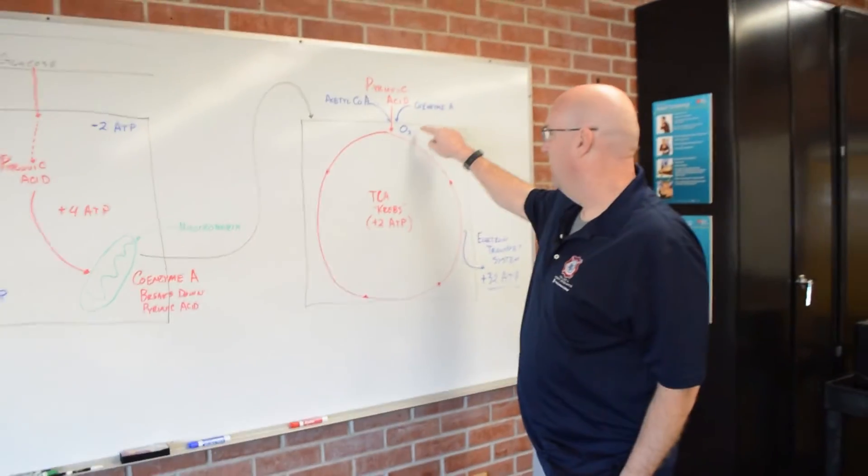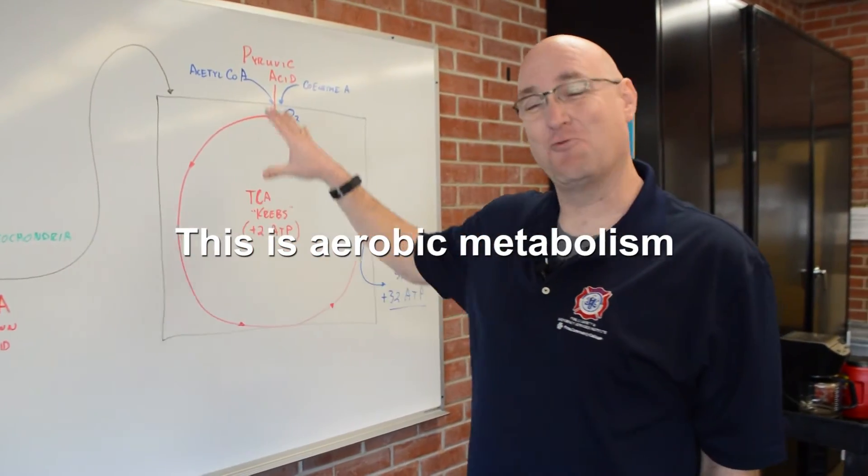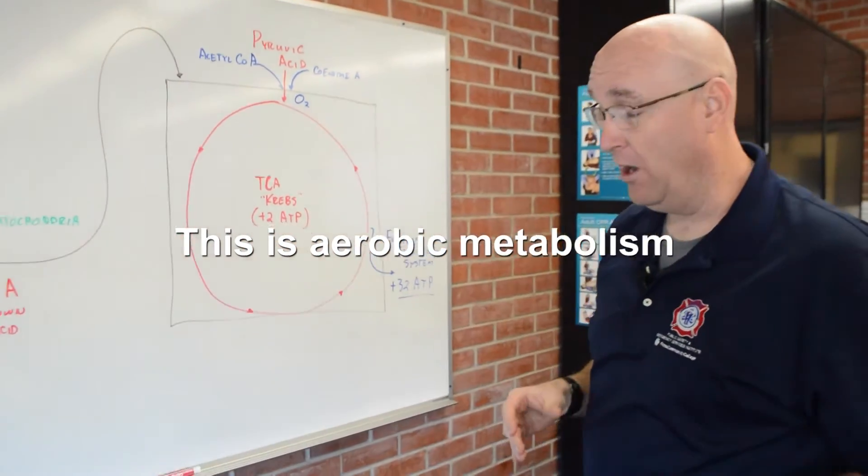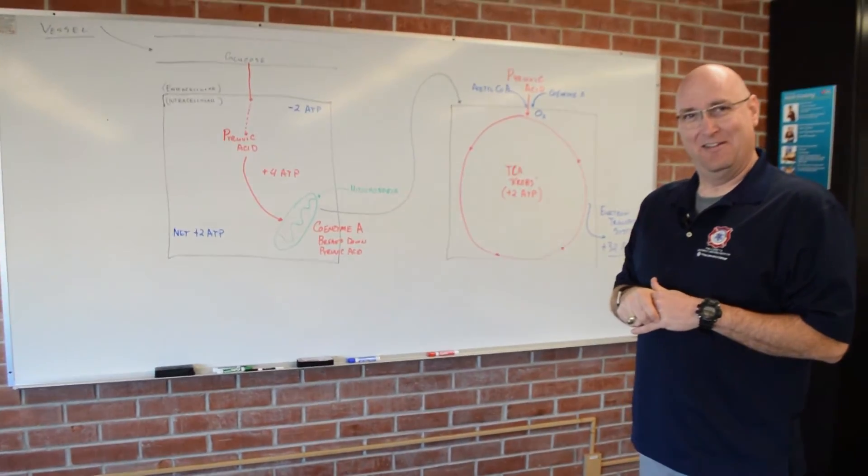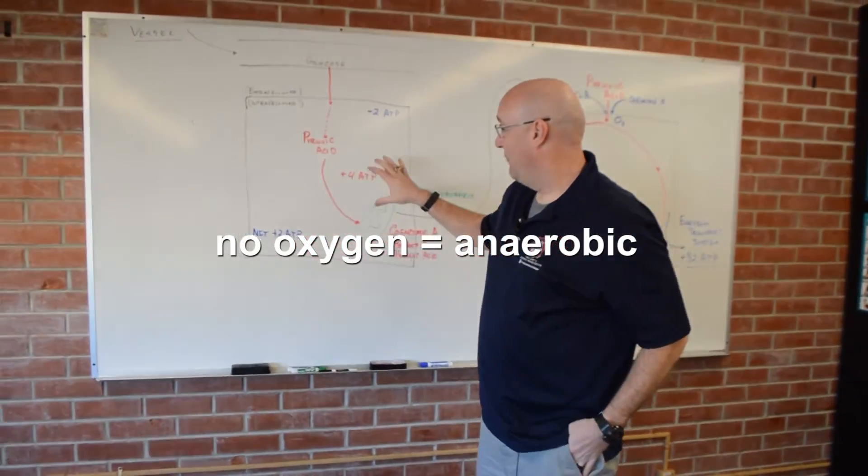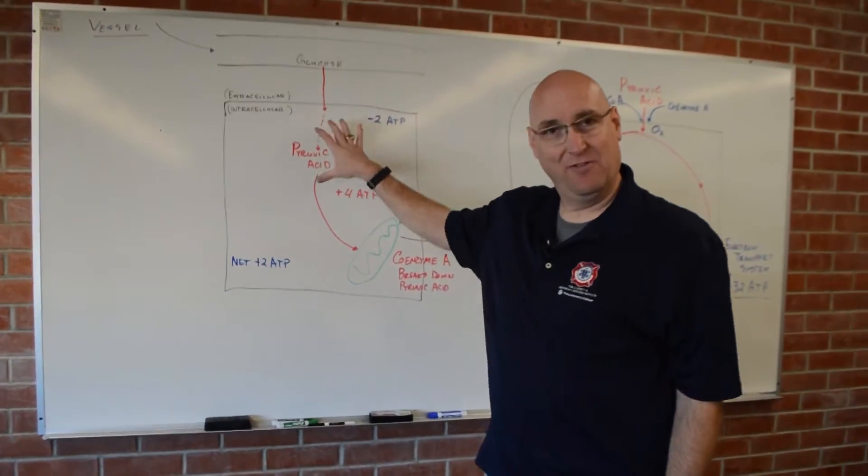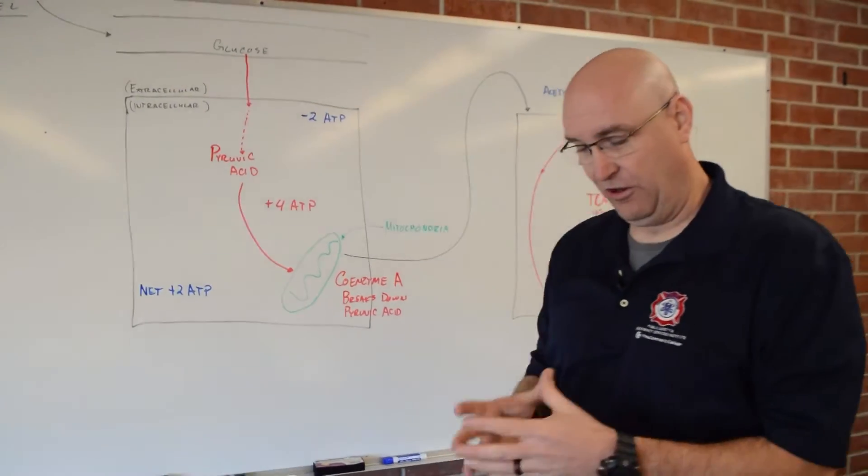And if you remember what I said too, oxygen is important. This is aerobic respiration. This is aerobic metabolism, if you want to go that far. If we don't have oxygen present, we become anaerobic. And if we don't have oxygen to break down this pyruvic acid, this pyruvic acid just starts to settle. It starts to accumulate.